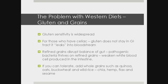Gluten sensitivity is widespread. Remember those tight junctions and the protein zonulin — for anyone who eats gluten, it's going to make those tight junctions not so tight anymore. For those with gluten sensitivity or celiac, gluten does not stay in the GI tract — it leaks into the bloodstream, which can be very problematic. Refined grains disrupt the balance of the gut — the pathogenic bacteria thrives on refined carbohydrates and sugars, weakening white blood cells produced in the intestine. However, if you can tolerate grains, add whole grains such as quinoa, oats, buckwheat, wild rice, chia, hemp, flax, and sesame into your diet.